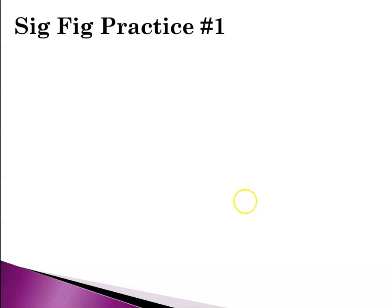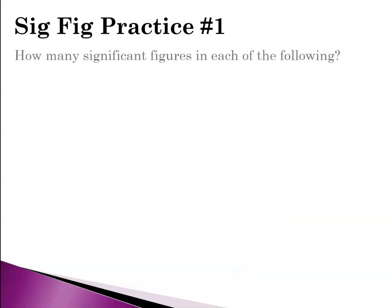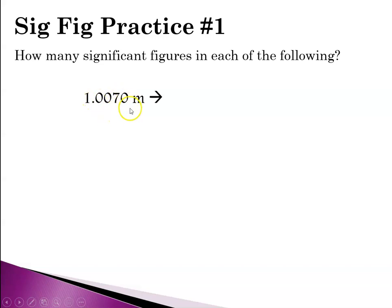So now let's do a little practice in figuring out how many sig figs are in a number. The number 1.0070 has two types of zeros. The captive zeros are significant. The trailing zero is significant because the number contains a decimal. So that gives us 5 sig figs.